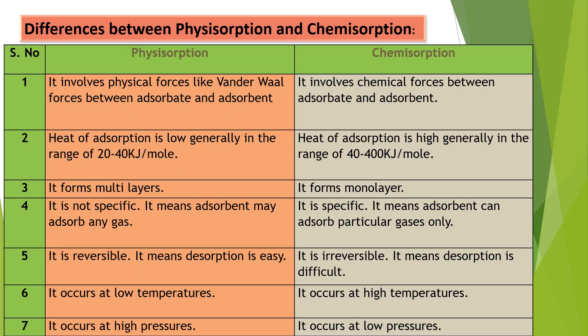Moving on to differences between the two types of adsorption — physisorption and chemisorption. The first difference: in physisorption, the forces existing between adsorbate and adsorbent are physical forces, whereas in chemisorption they are chemical forces. The second difference concerns heat of adsorption — the amount of heat evolved during adsorption. It is low in physisorption, in the range of 20 to 40 kilojoules per mole, and high in chemisorption, in the range of 40 to 400 kilojoules per mole.